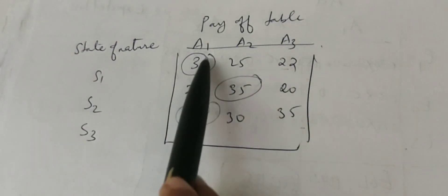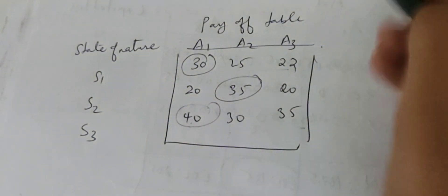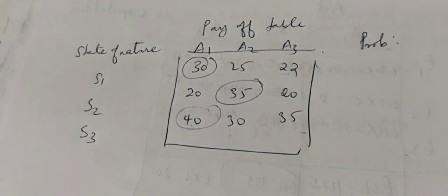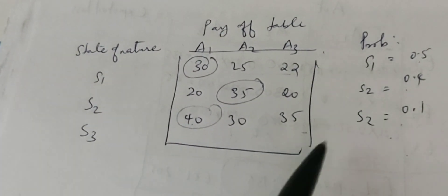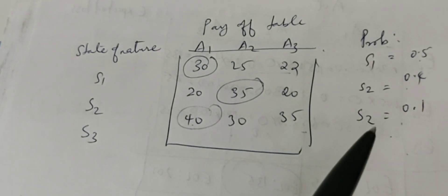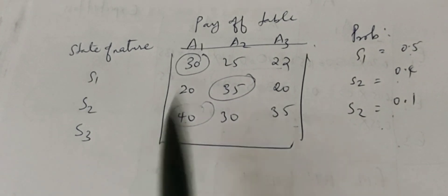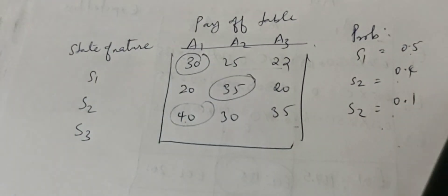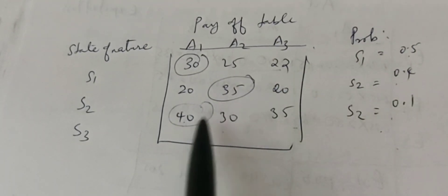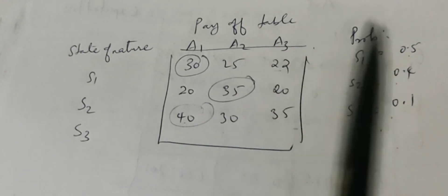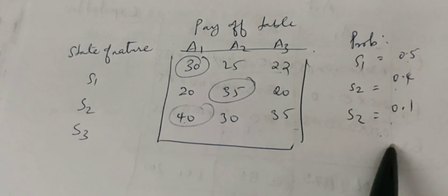We have probabilities 0.5, 0.4, and 0.1. We multiply each payoff by its corresponding probability. For the first strategy: 20×0.4 and 40×0.1. For the second strategy: 25×0.5, 35×0.4, and 30×0.1. We multiply the payoffs by the probabilities.